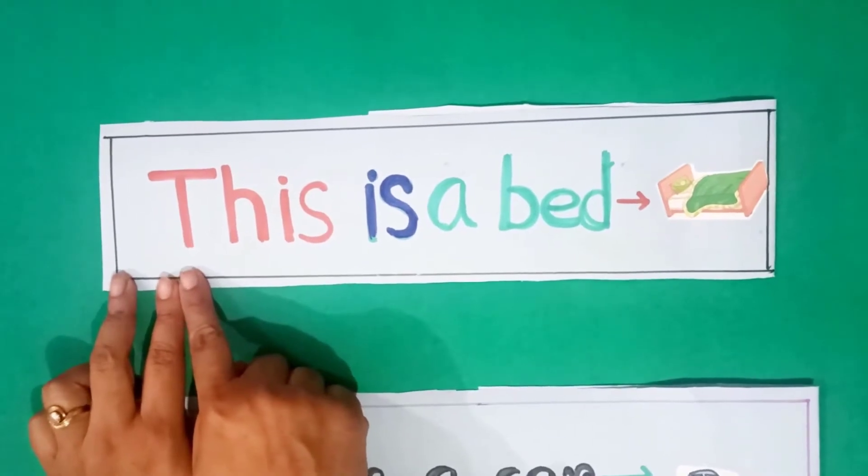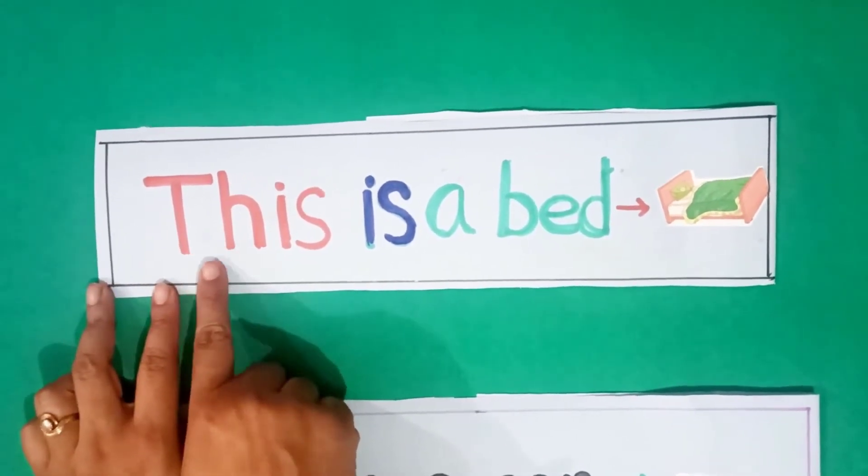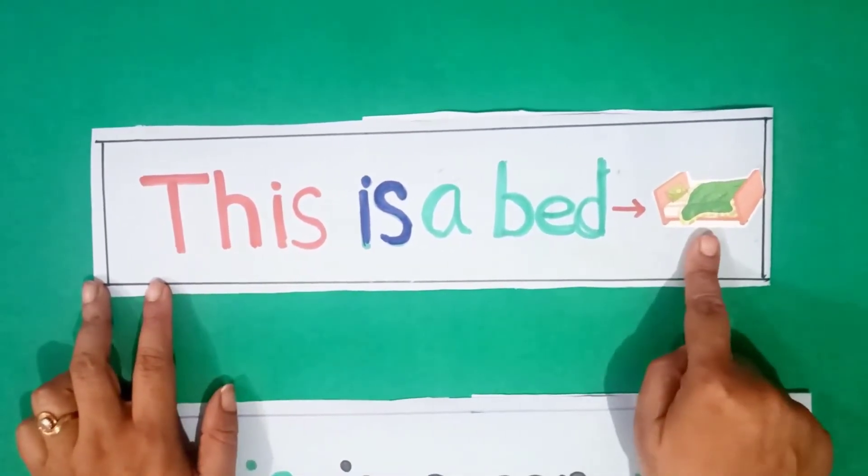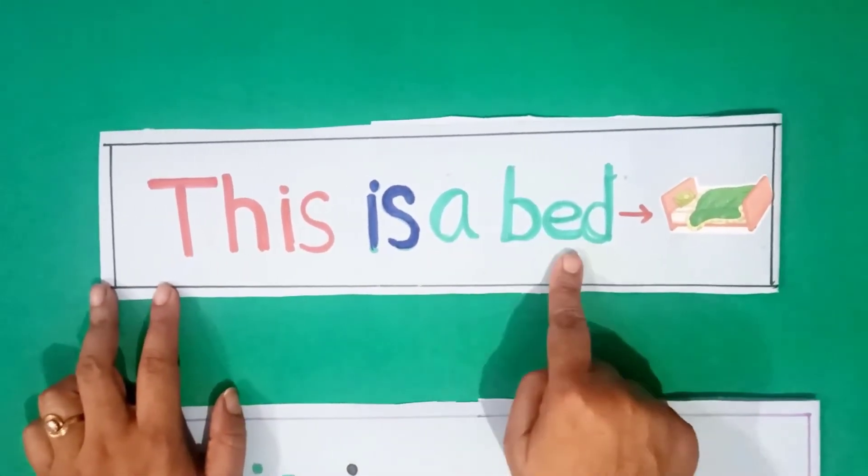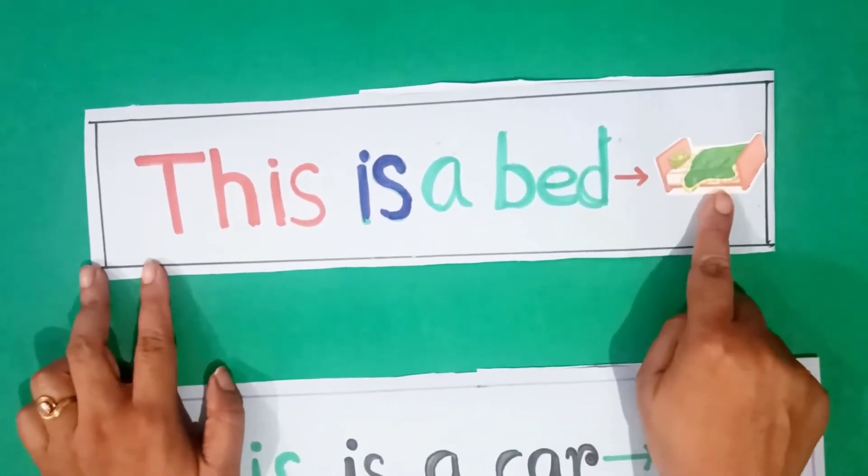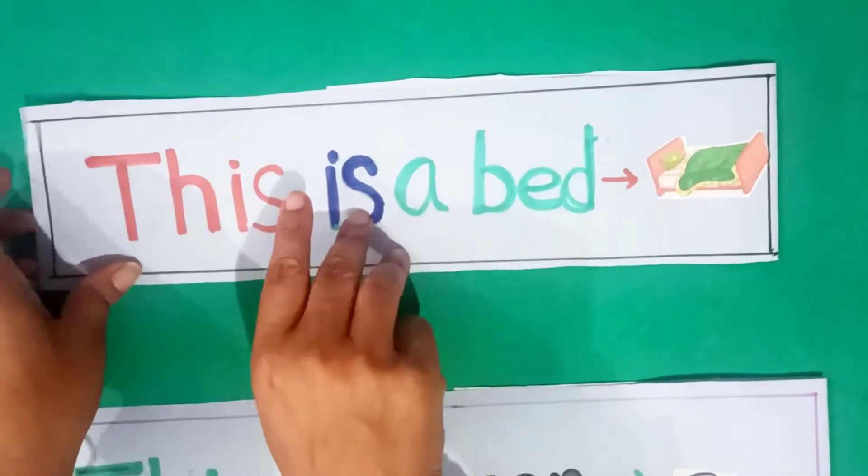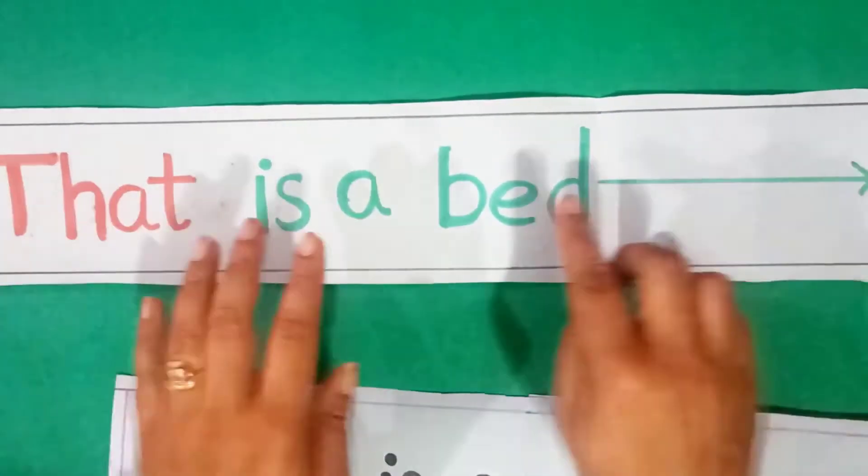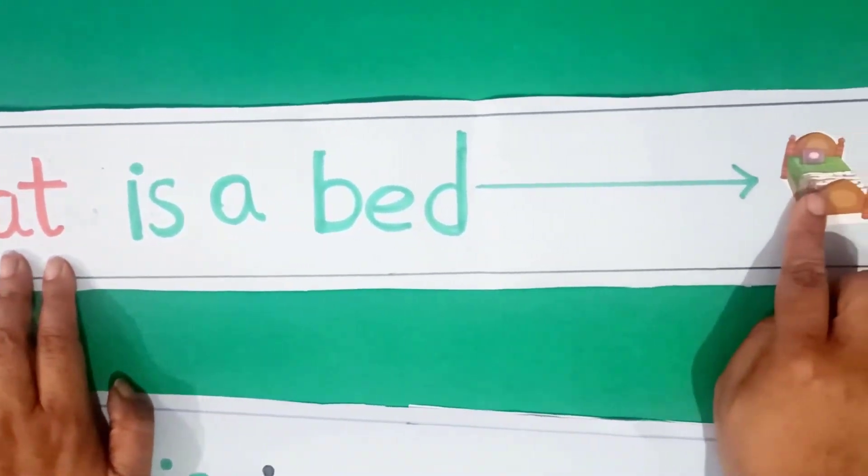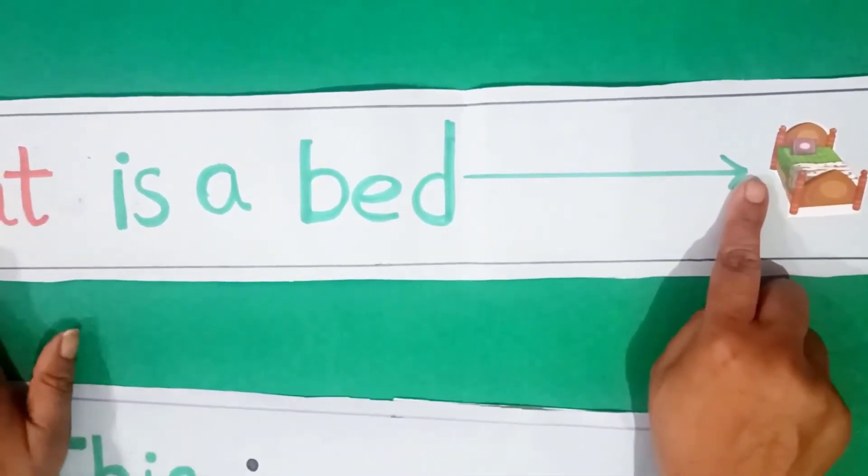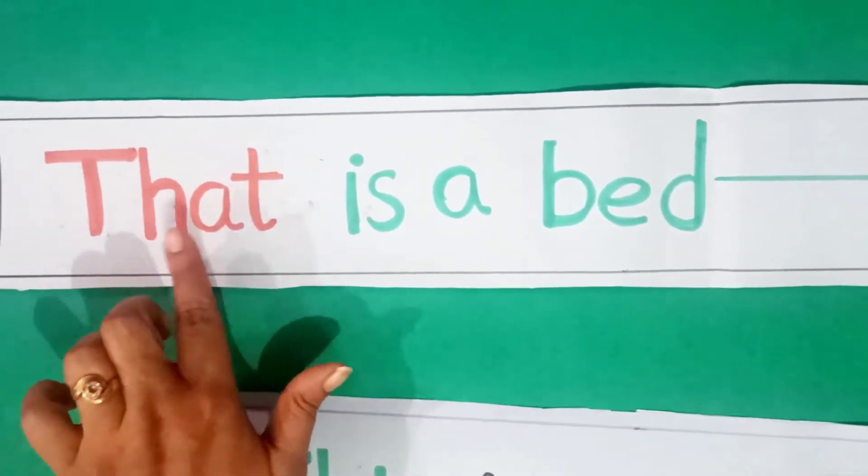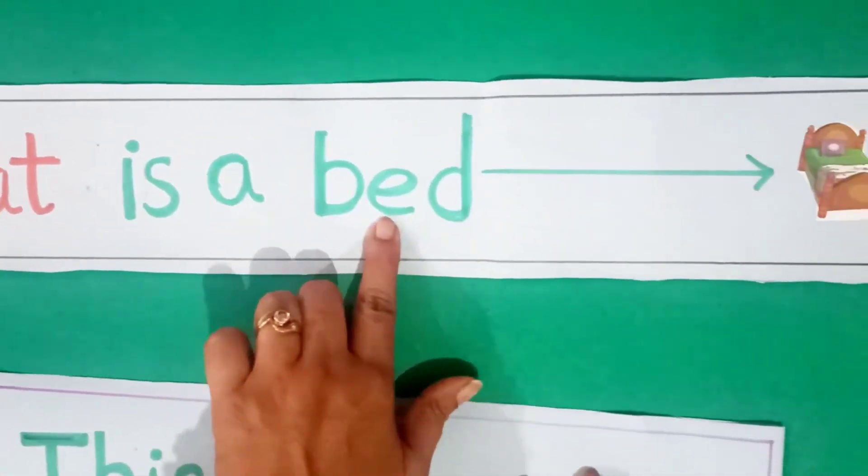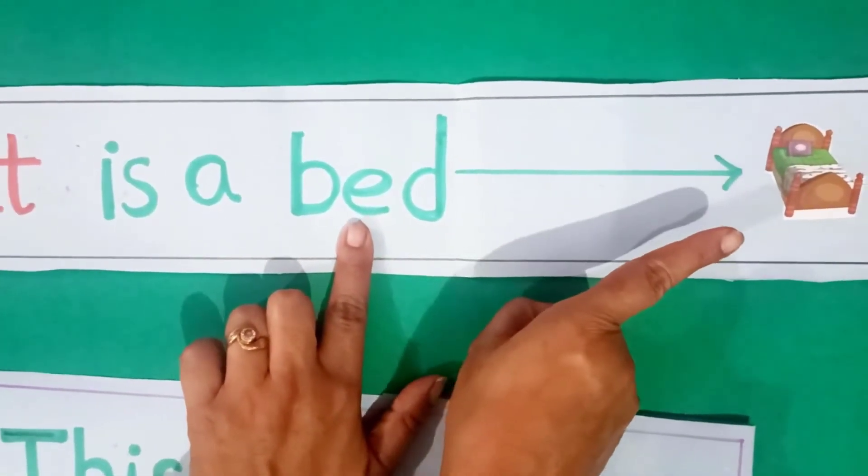Now, I am giving you more examples. See, in this sentence, this is a bed. This is a bed. See, look at the bed, it is near to us. Now, see, in this picture, you can see, bed is far from us. See, this is very far. So, that time we are using that is a bed. That is a bed.